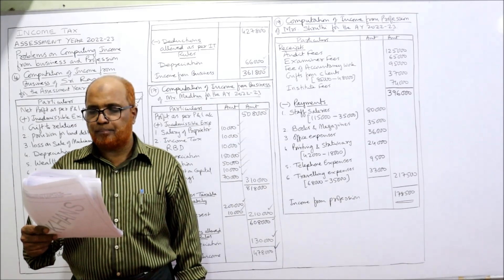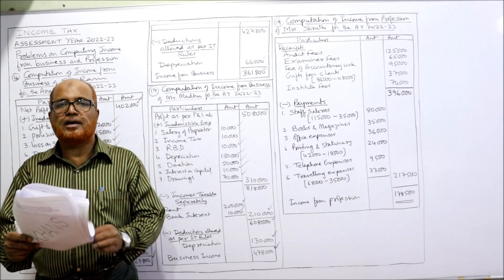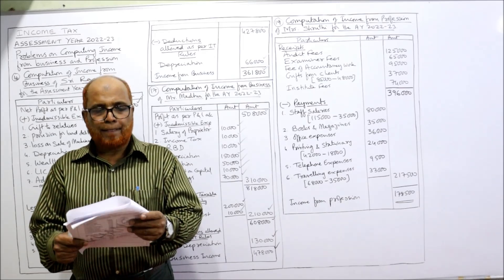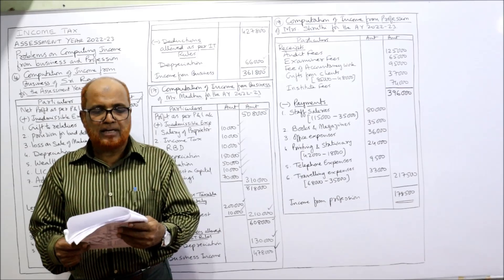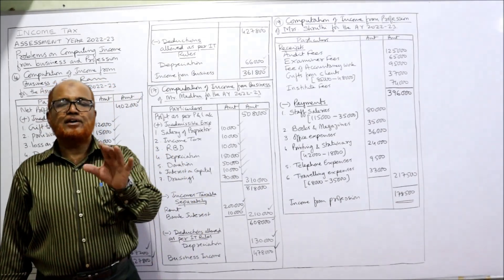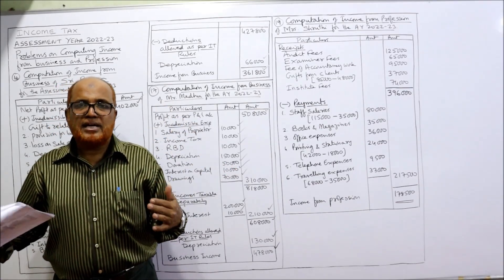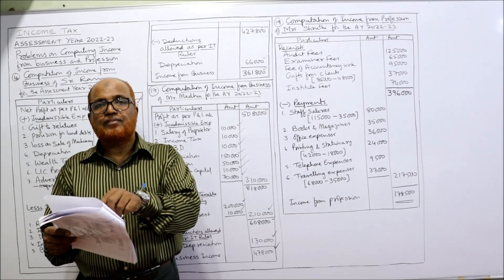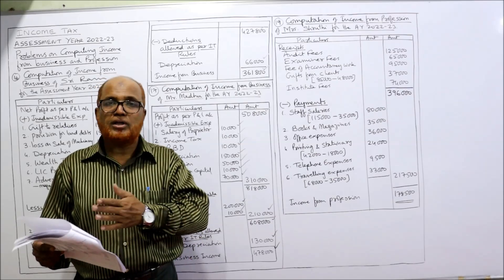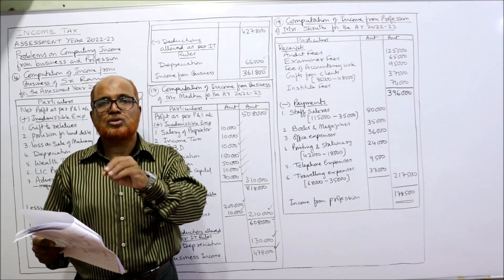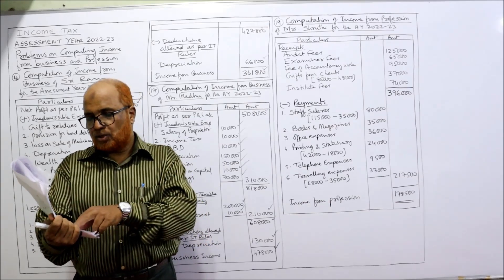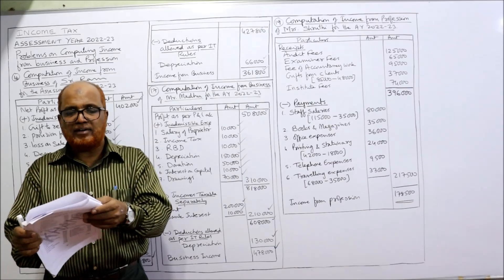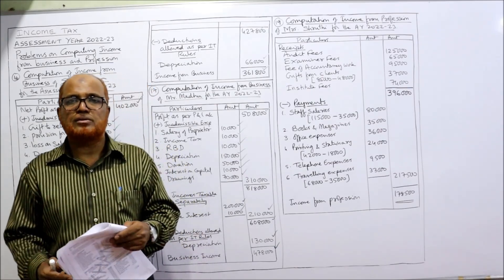Mrs. Shruti, a chartered accountant, submits the following receipts and payments account for the year ended — compute her professional income. A receipts and payments account is given. Other information: gift received of 48,000 was received from her brother-in-law. According to income tax provisions, gifts received from clients in appreciation of services rendered is professional income — taxable. But the gift from brother-in-law is a personal gift, not professional income, so this 48,000 will be deducted. Out of total gifts of 85,000, deduct 48,000 — the remaining 37,000 is taxed.